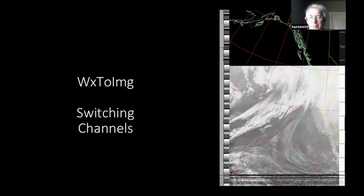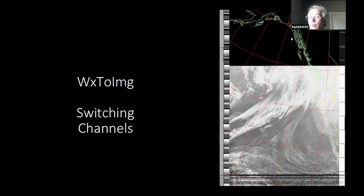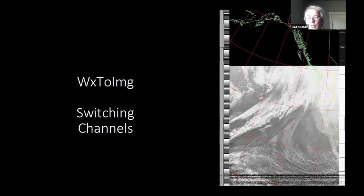One thing you might notice is that the image can change partway through. This is a winter image on channels 3 and 4. Where the sun is up and we can actually see the ground, the satellite switches from mid-infrared to near-infrared — the visible camera switches on. Here the camera is off, and further south where the sun has risen, the camera switches on. You'll see panels turn on and off depending on whether it's daytime or nighttime at the satellite's current ground position.